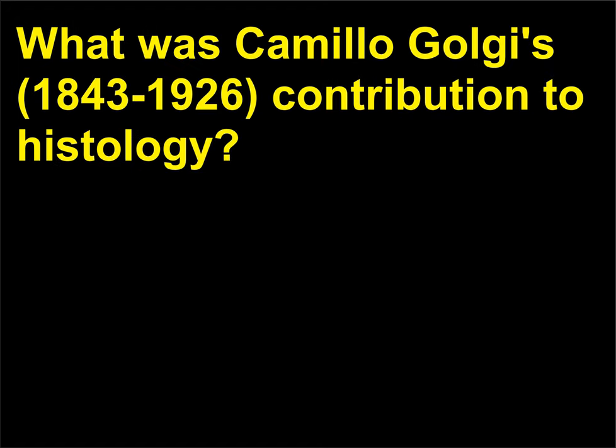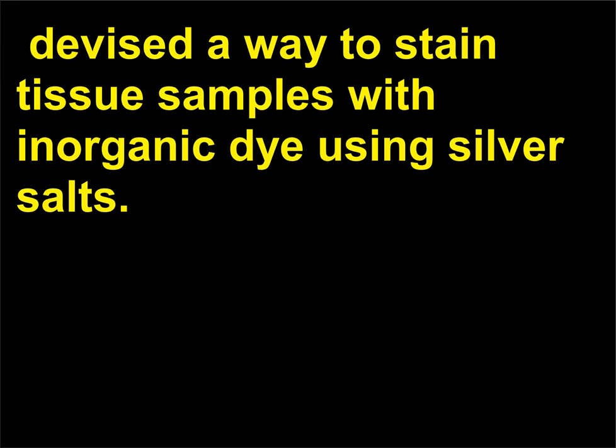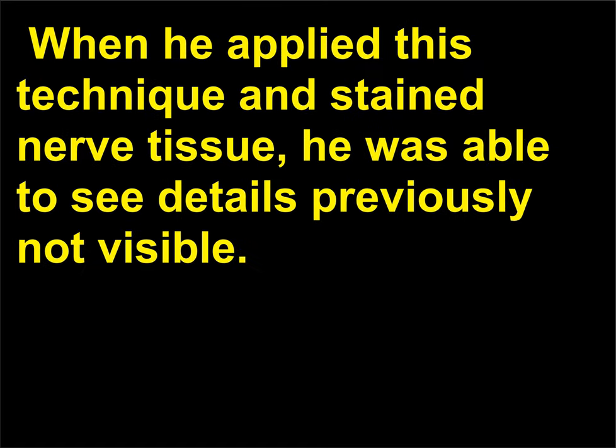What was Camillo Golgi's (1843–1926) contribution to histology? In 1873, Camillo Golgi devised a way to stain tissue samples with inorganic dye using silver salts. When he applied this technique and stained nerve tissue, he was able to see details previously not visible.